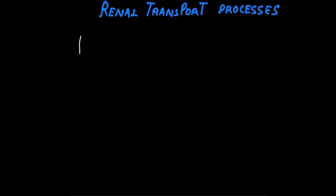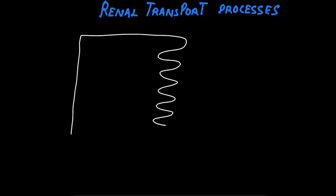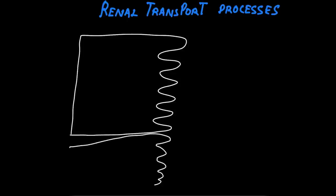Good day dear students. This is a video on renal transport processes. First I will be drawing a tubular epithelial cell — that is an epithelial cell lining the tubular part of the nephron. This epithelial cell is slightly convoluted and so it has a brush border. The two epithelial cells look like a pack of Pepsi cans or Coca-Cola cans, and in between them are the intercellular junctions, which is the tight junction.